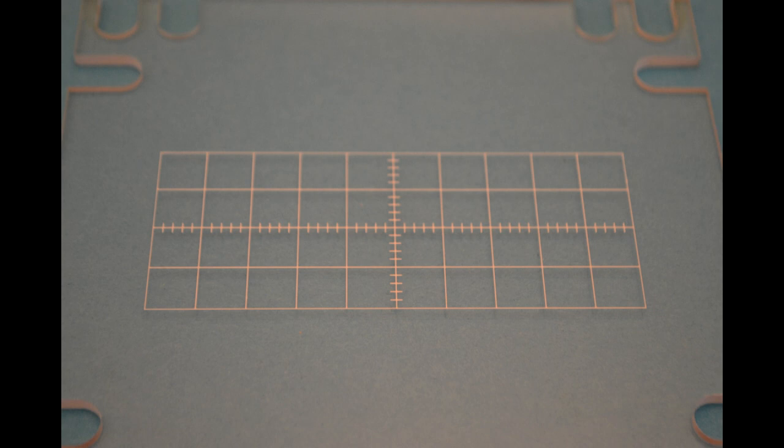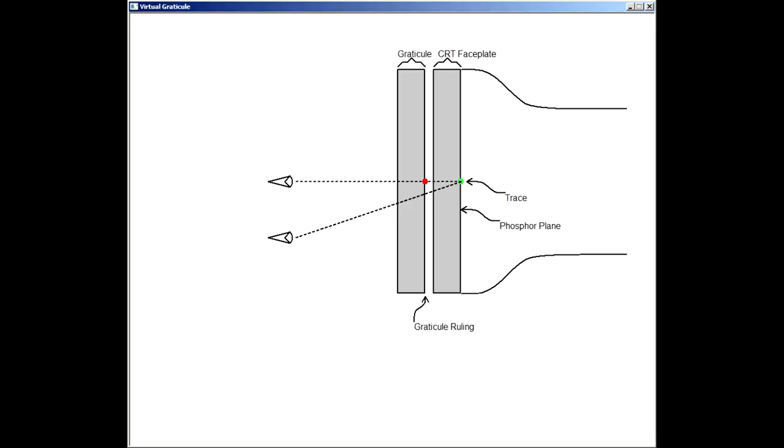The graticule of an oscilloscope is a grid or ruler used to make measurements of the trace. Older oscilloscopes had a graticule whose real grooves were on a piece of plastic separated from the trace on the phosphor screen by the thickness of the CRT faceplate, sometimes as much as three-eighths of an inch.